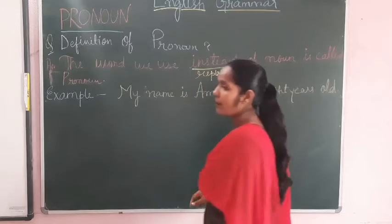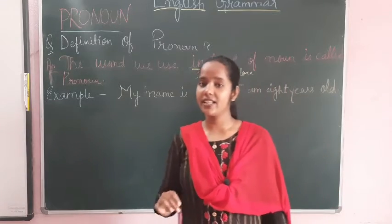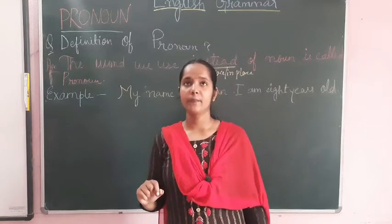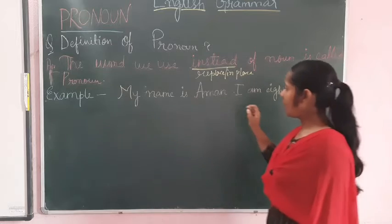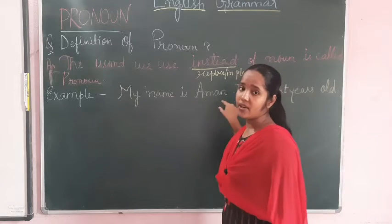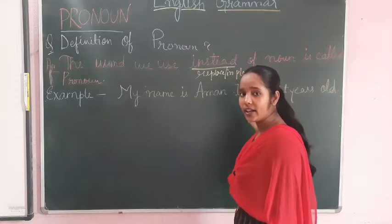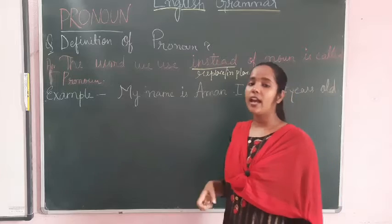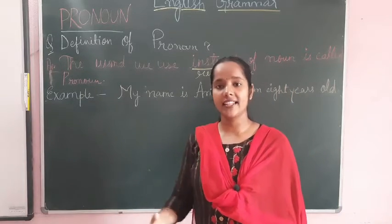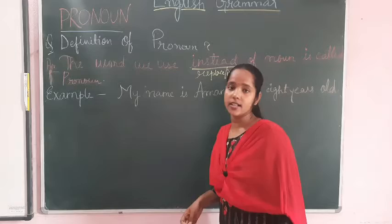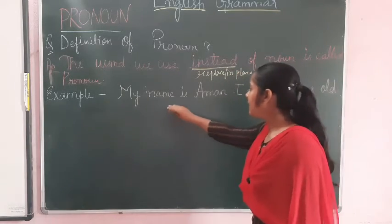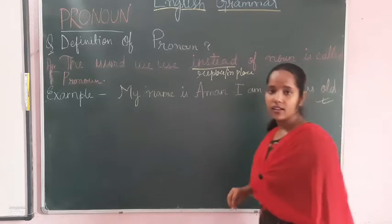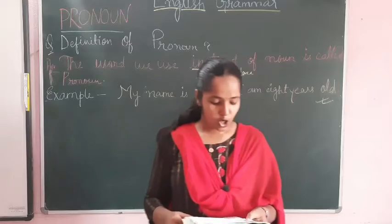In every sentence we can't use a noun every time. For example, if I write: 'My name is Aman, Aman is a good boy, Aman reads in this class, Aman likes to read' — I can't write that noun every time. We need some supportive words to write the sentence correctly. For example: 'My name is Aman, I am 8 years old' — that is a perfect sentence.